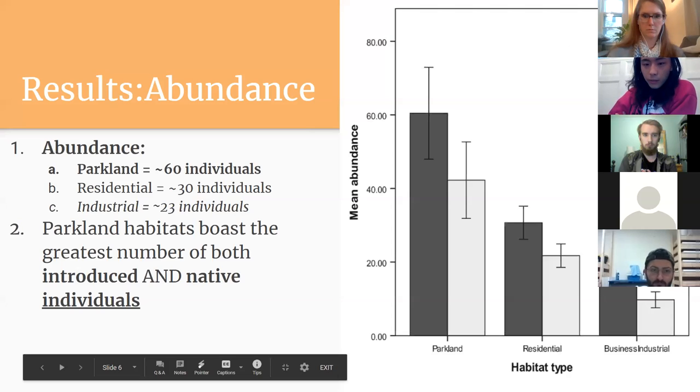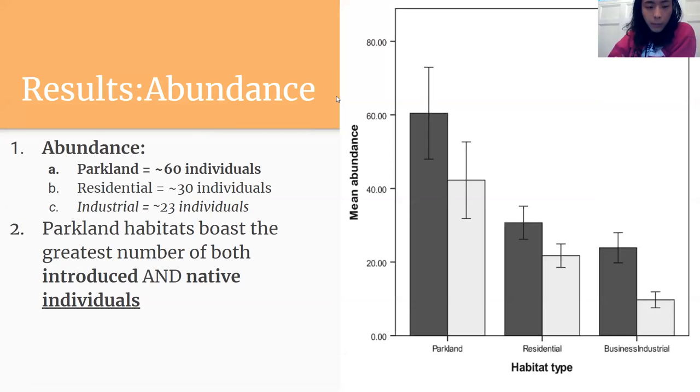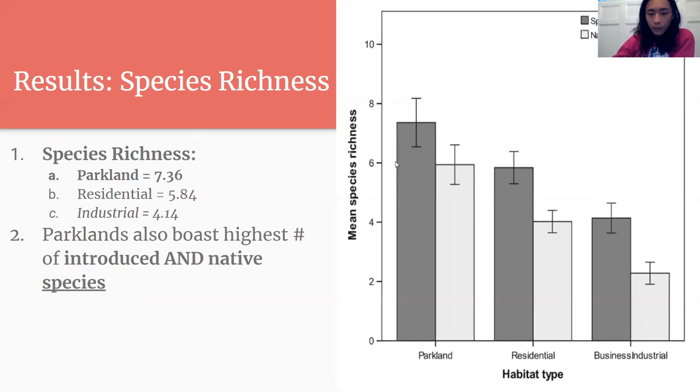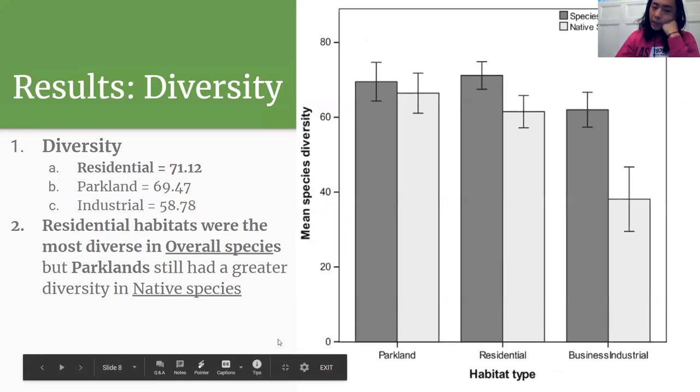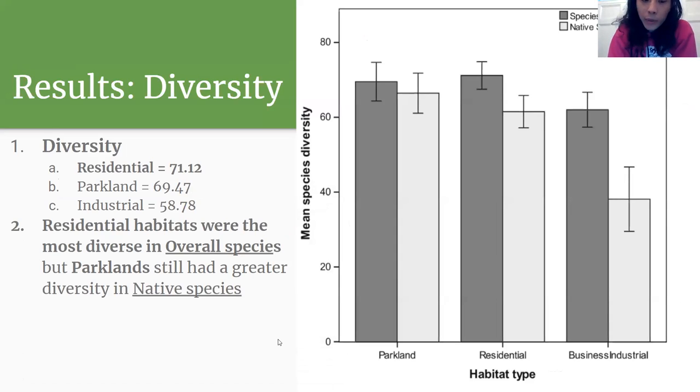These were the results. The parkland habitats had the highest number of recorded individuals, a total of 60. On the graph, the parkland habitats had the greatest abundance of both native birds and birds in general. Moving on to species richness, the parklands once again had the highest number of introduced and native species. The last result was diversity, and this time the residential areas had the most diverse birds - the most diversity in terms of not just natives but overall birds in general.